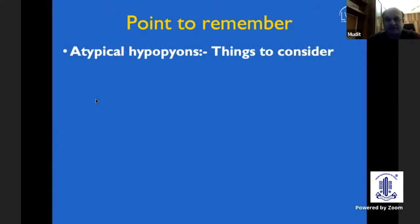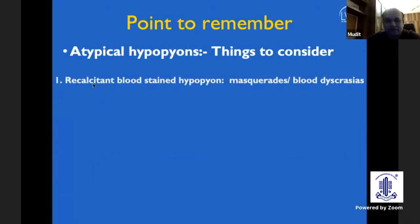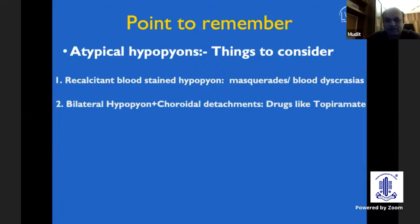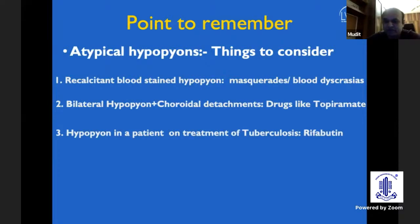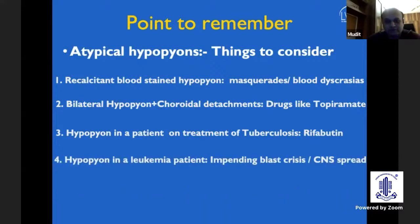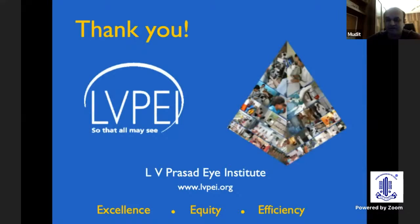In summary, whenever you see patients with atypical hypopions: recalcitrant blood-stained hypopions can indicate blood dyscrasias — get a peripheral smear and if necessary an AC tap. Bilateral hypopions with choroidal detachments — think drug-induced reactions such as topiramate. Hypopion in a patient on tuberculosis treatment — remember rifabutin. Hypopions in leukemia patients may signal impending blast crisis, CNS spread, or relapse. With that, I end my presentation. Thank you so much.